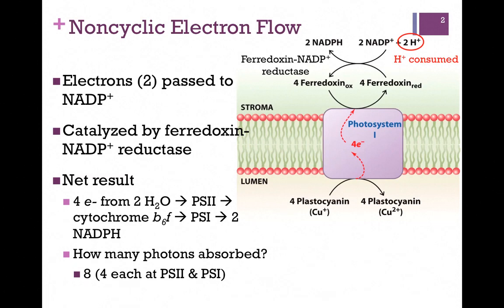In other words, it transfers electrons from ferridoxin and thereby reduces NADP+. So we have a terminal acceptor, in this case NADP+. Our net result was that ultimately we took four electrons from two water molecules, passed those through Photosystem 2 to Cytochrome B6F, ultimately to Photosystem 1, and then eventually produced two molecules of NADPH.